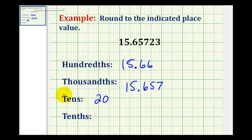And for the last example, we're going to round to the tenths, which would be this place value here. The digit to the right is a five, so again, we're going to round up. So we change the six to a seven and leave off the remaining digits to the right. So we'd have fifteen point seven, or fifteen and seven tenths.